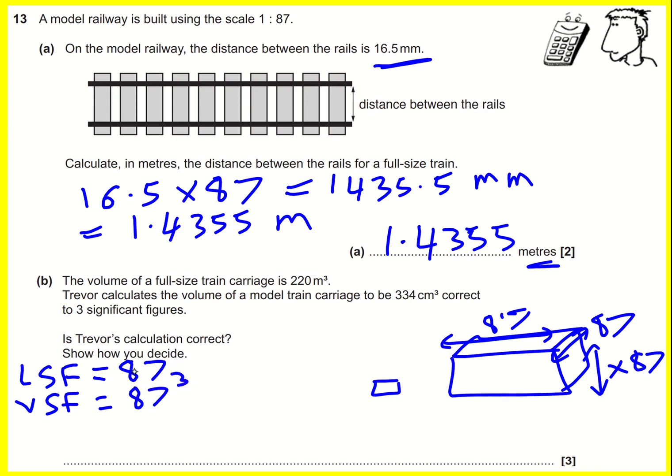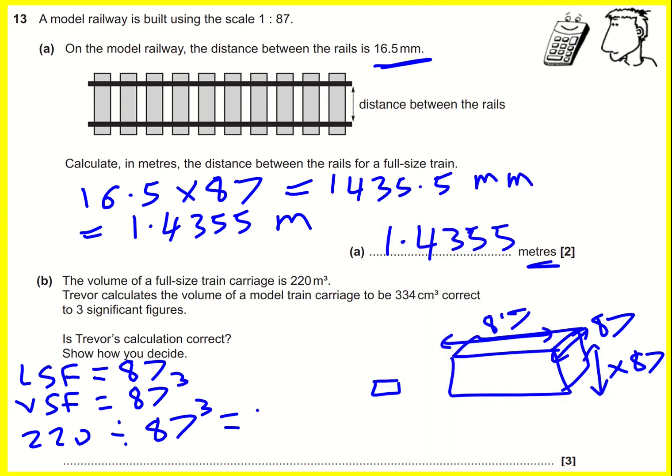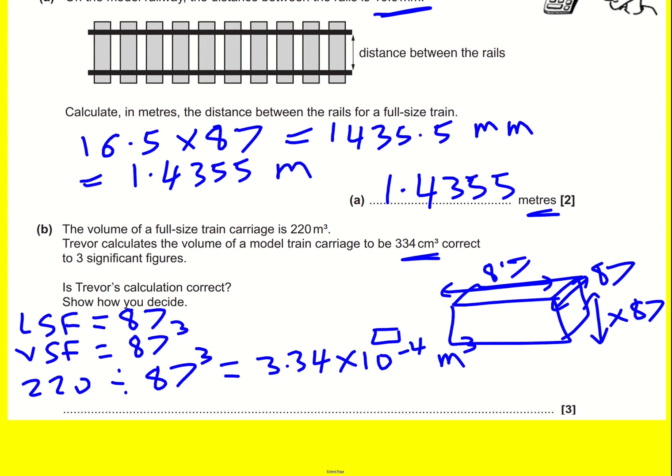If I want to go from the full train to the model train, I'm going to divide by that scale factor. So 220 divided by 87 cubed gives me quite a small number: 3.34 times 10 to the minus 4, but that is in meters cubed.